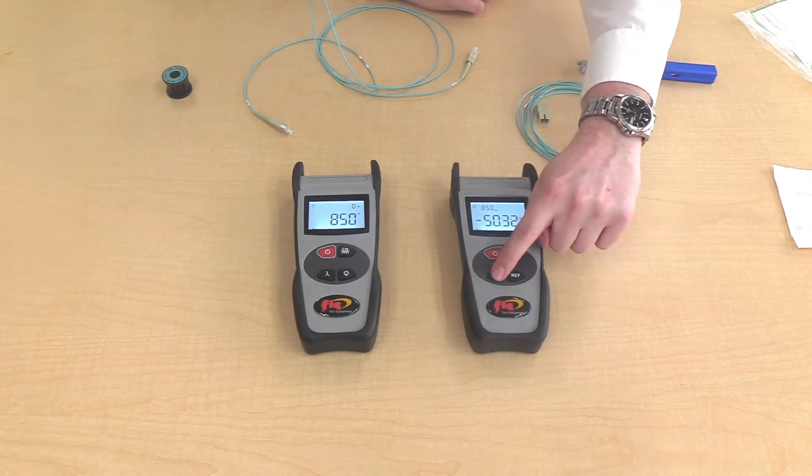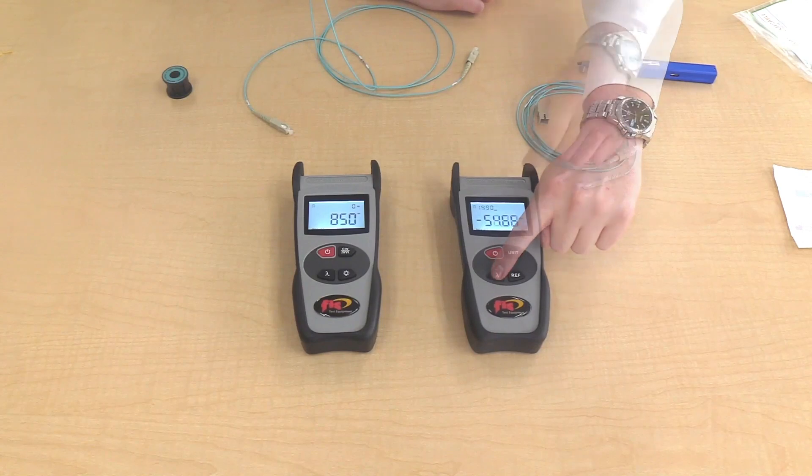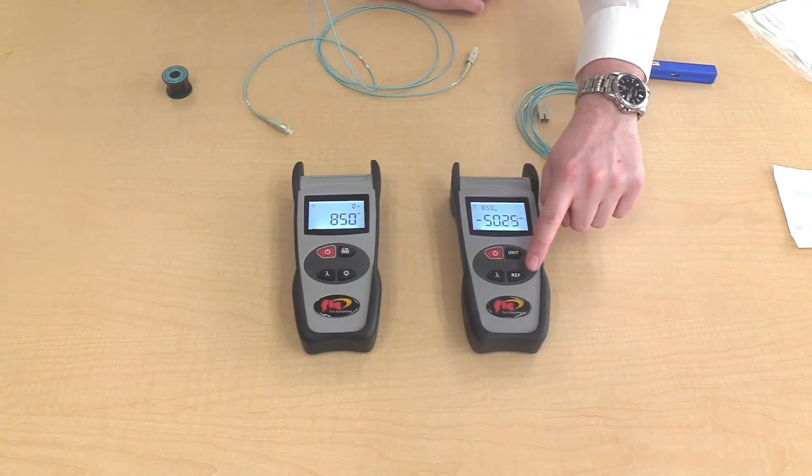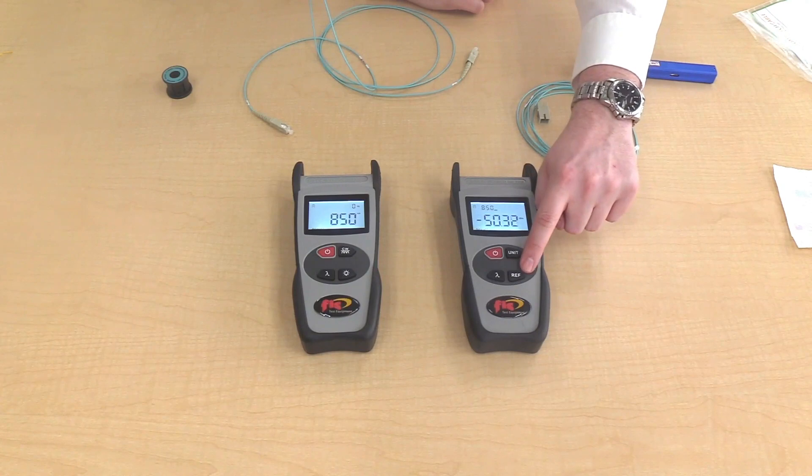To change the wavelength, press the lambda symbol. The bottom right button is the reference button. This is for it to measure relative loss on patch cord or cable.